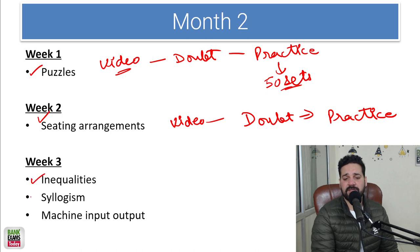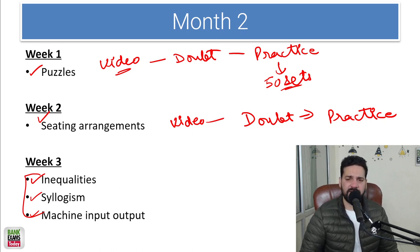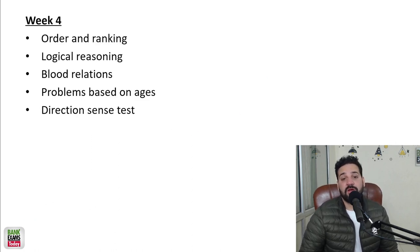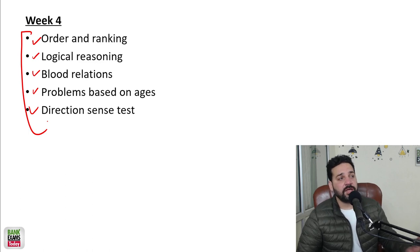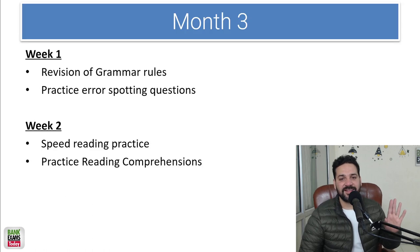In week 3, you should do inequality, syllogism, and machine input-output. Again, you need to watch the videos followed by doubt clearing sessions and practice. Practice at least 30 questions, and if possible more than that. In week 4, cover order and ranking, logical reasoning, blood relations, problems based on ages, and direction sense test. You may feel we are going slow right now, but two months of preparation will have been completed.